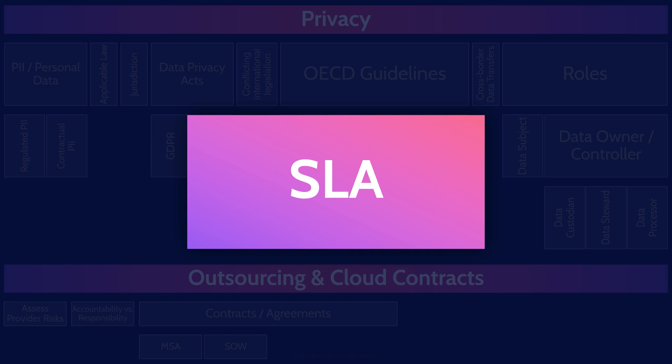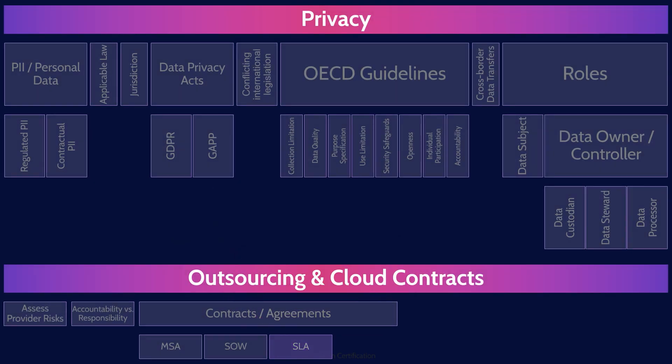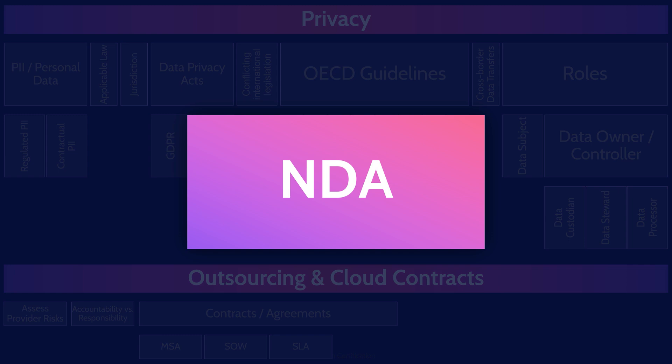One important contract tool worth repeating is the SLA, or service level agreement. SLAs can be used to communicate requirements to a cloud service provider. They are documented commitments by the service provider to a consumer, covering things like confidentiality, integrity, availability, responsiveness, and so forth. SLAs are an addendum to the overall contract. An NDA, a non-disclosure agreement, may forbid parties from disclosing certain information about the service and the relationship.